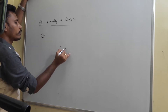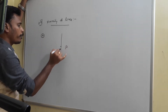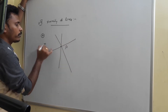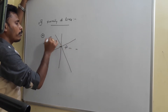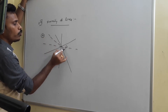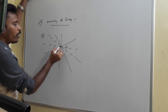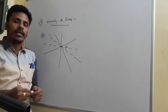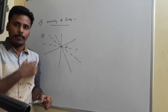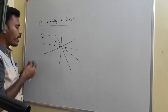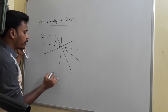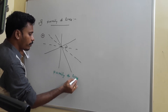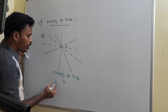If you have a point P, passing through this point P there exist infinite number of lines. All these lines are known as concurrent lines, and we also say that all these lines belong to the same family — we call them the family of lines, or concurrent lines.